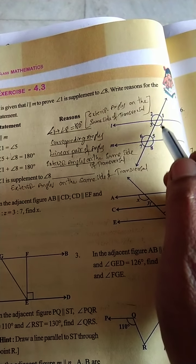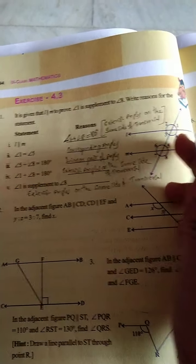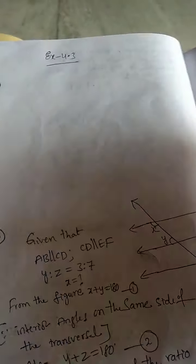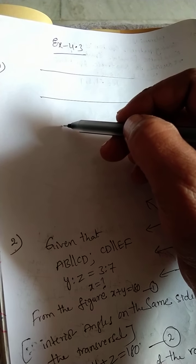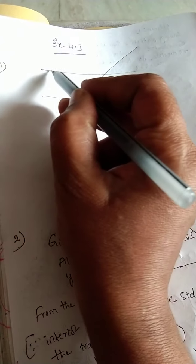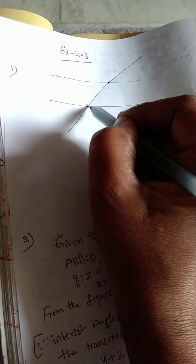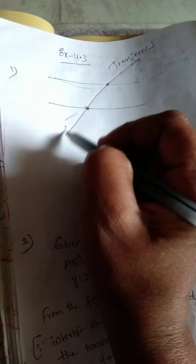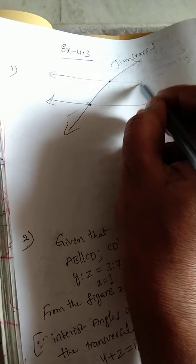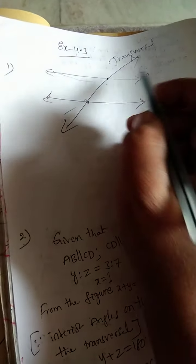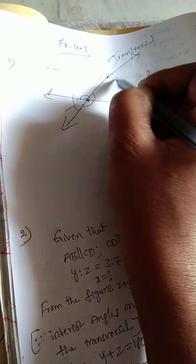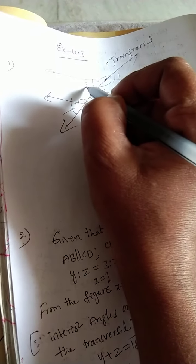Now I will draw the figure and explain clearly what are exterior and what are interior angles. If any two lines are parallel and a line intersects them at two distinct points, that line is called a transversal. Whenever the transversal intersects the parallel lines L and M at two distinct points, four angles will form at each point — I am labeling them one, two, three, four at one point.